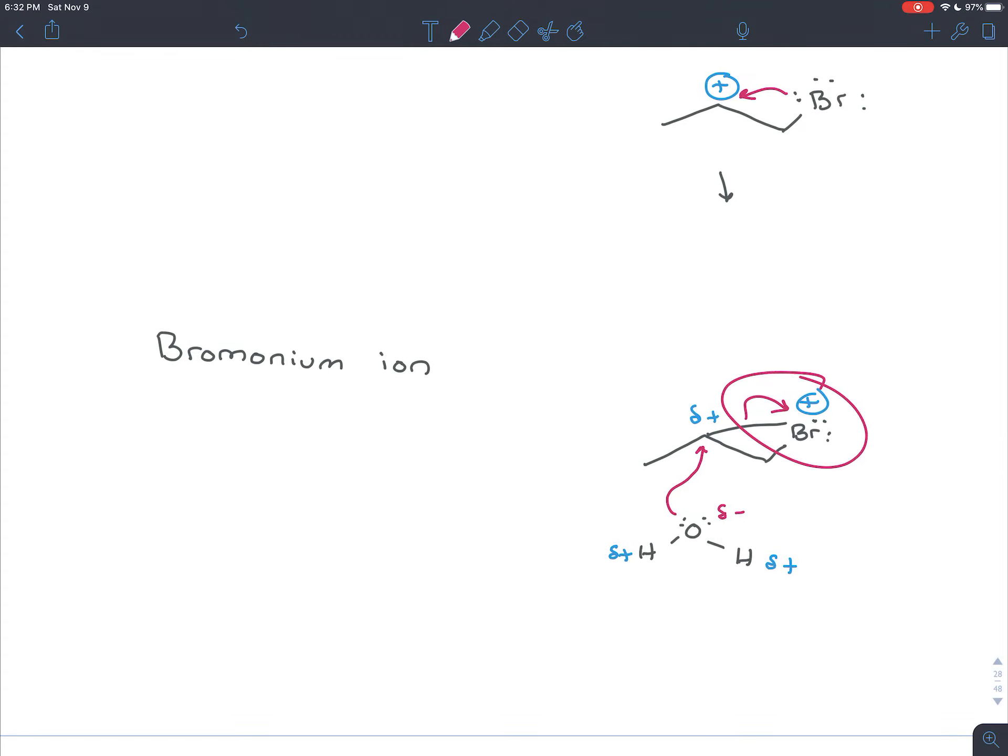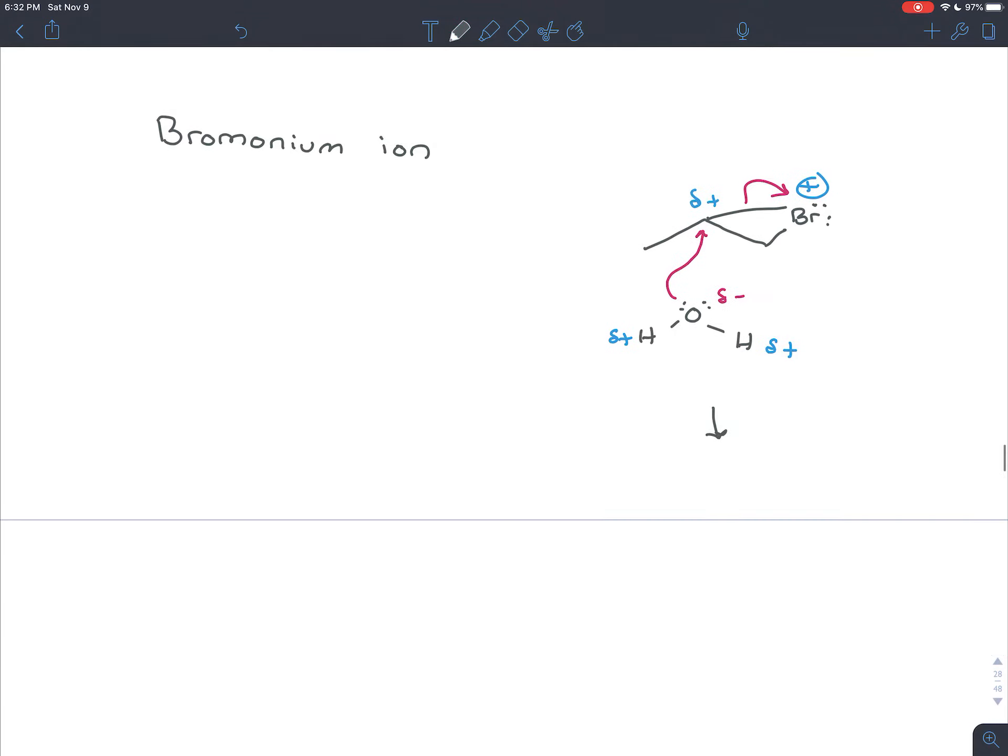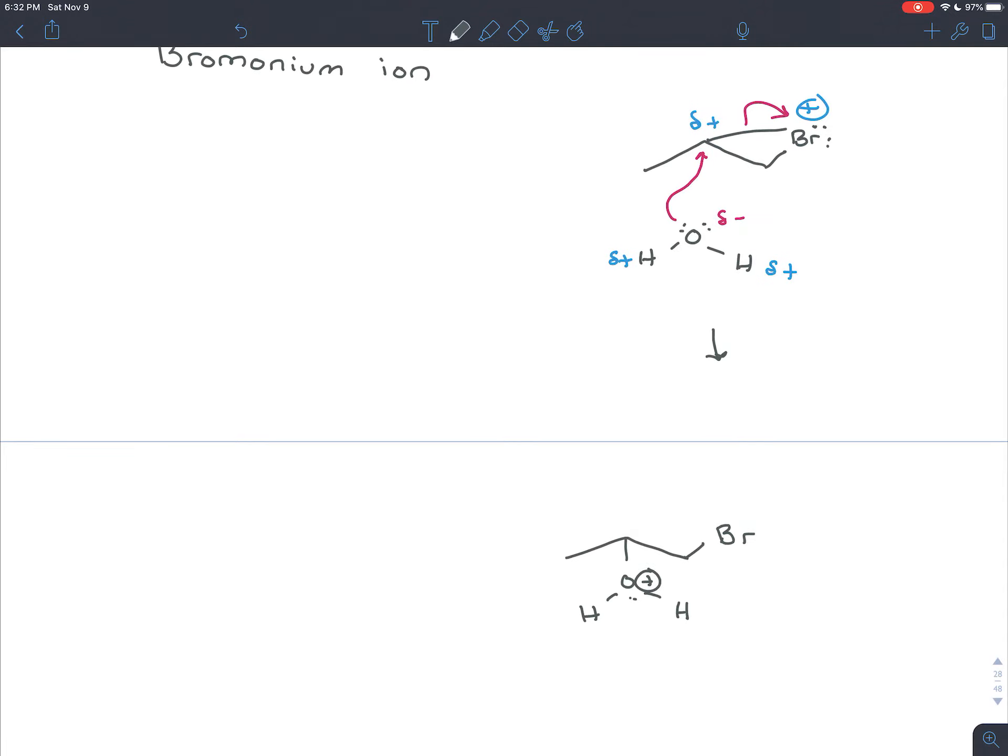So it takes the place of the bromide in the other mechanism. That bursts that ring open and then you end up getting a bromine and an H2O attached to your molecule. Now that oxygen has three bonds so it has a full positive charge, so it just needs to lose its hydrogen to another water molecule. We've seen this before in acid-catalyzed hydration and the mechanism for that, how you can do a proton transfer and stabilize a positive charge by removing an H+.